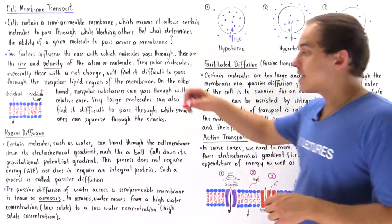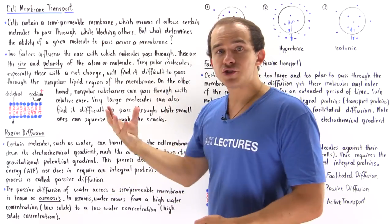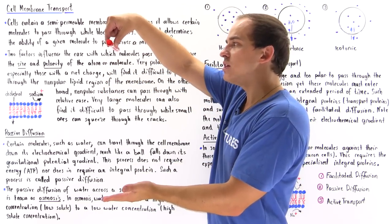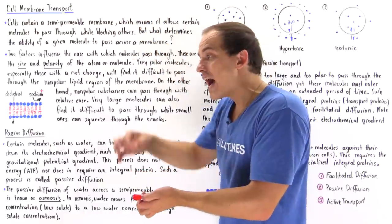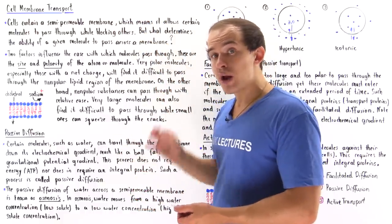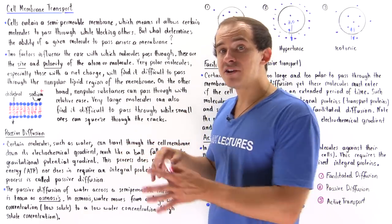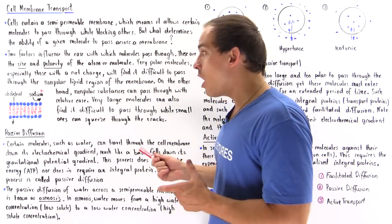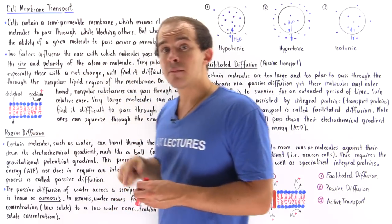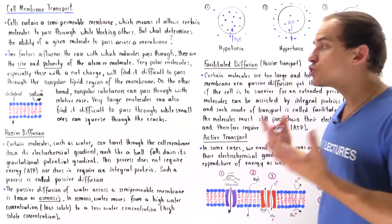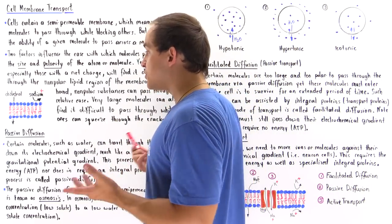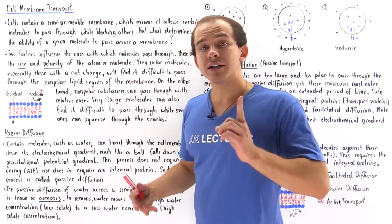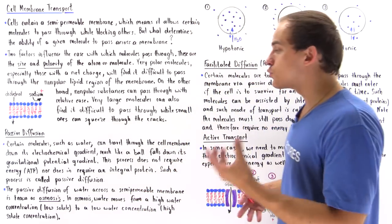The example I can give is this marker falling down its potential gradient. We have a high potential and a low potential, and as soon as we let go, the marker moves down its gravitational potential gradient — we expend absolutely no energy. In the same way, cholesterol and water will move down the electrochemical gradient with no energy required. This is passive diffusion: no energy and no transport protein.